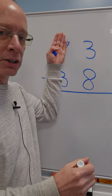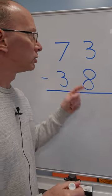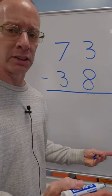First of all, we're gonna subtract the ones. Ignore the tens. Work on the ones. So we got three minus eight. Three minus eight. What is that?